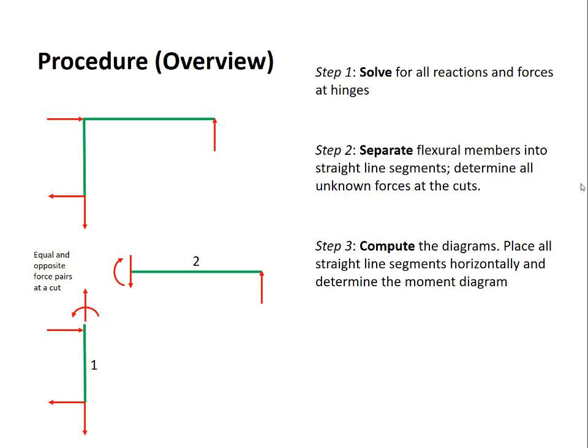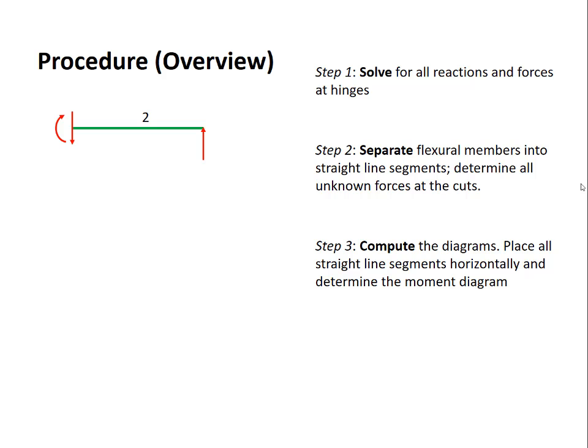The next step is to compute the moment diagrams. We'll place all of the segments horizontally and once they're horizontal they're just like a beam. Do everything you know how to do to compute the moment diagrams. If we look at member two, we would compute the moment diagram shown here. Look at member number one. Forget about the axial forces because those don't factor into the moment diagram. Obtain the moment diagram shown here. Once again this is a qualitative overview and we'll go into more detail shortly.